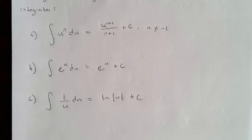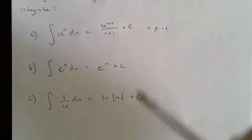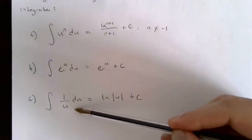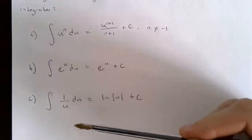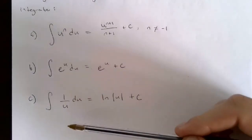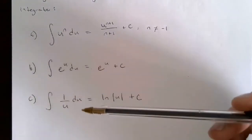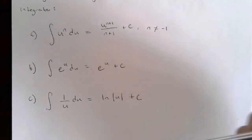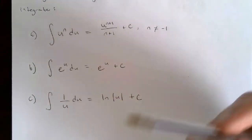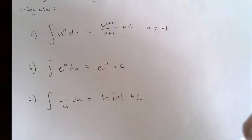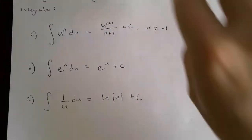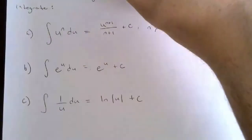You want to get your integral into one of these three forms, because if you can, then you know how to take the anti-derivative. Typically this happens when you have some sort of product, or sometimes a quotient, as your integrand. We'll look at some examples to show why this works.